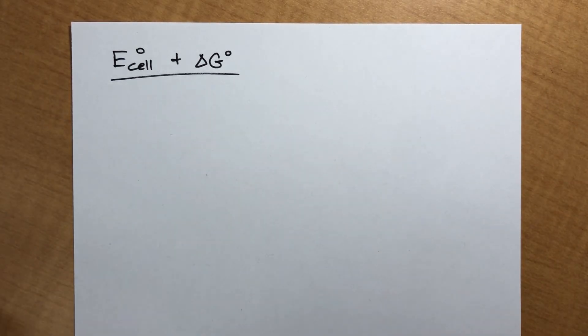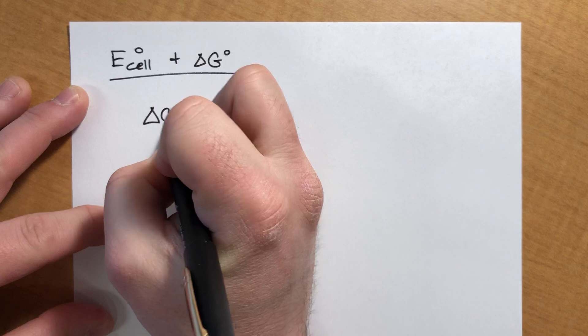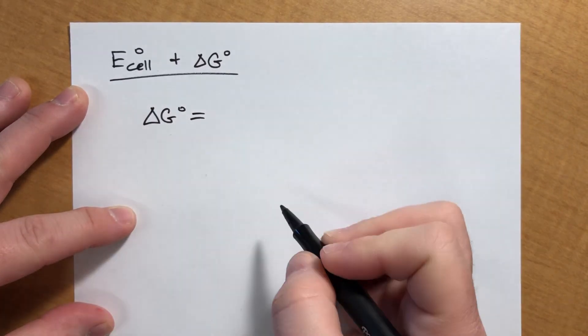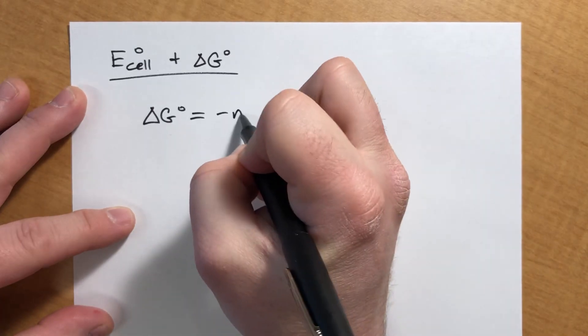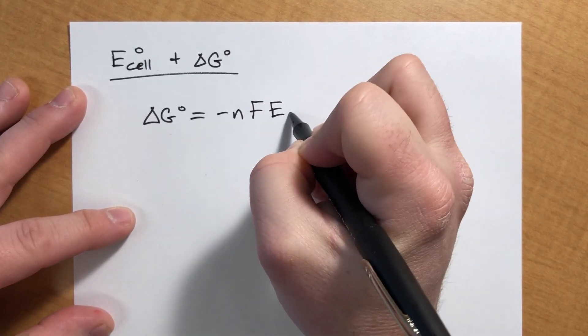I'm just going to give you the equation, we're not going to derive anything here, but it's literally just some algebra. It turns out that delta G for any given reaction that is a voltaic cell is negative NFE sub cell.